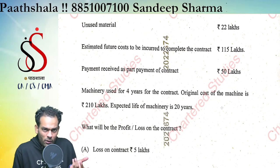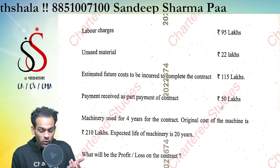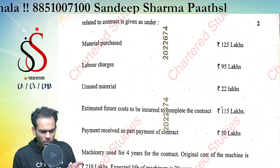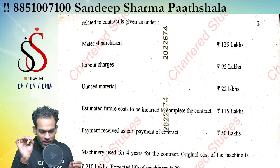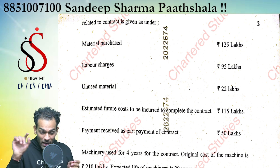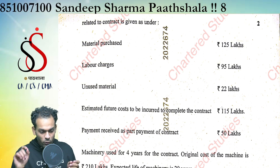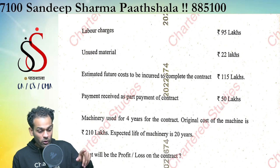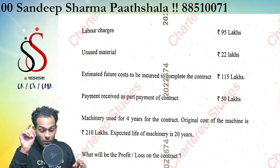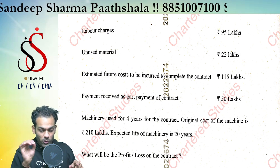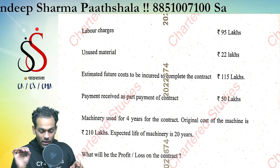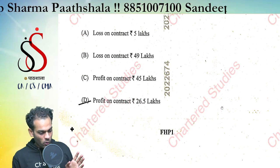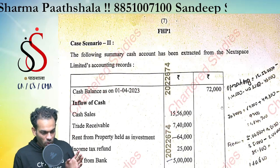How was the total cost of 355 lakh calculated? Calculate with me: material purchase 125 plus labour 95, minus unused material 22, plus 115 estimated future cost, plus machinery's proportionate depreciation 210 divided by 20 multiplied by 4.